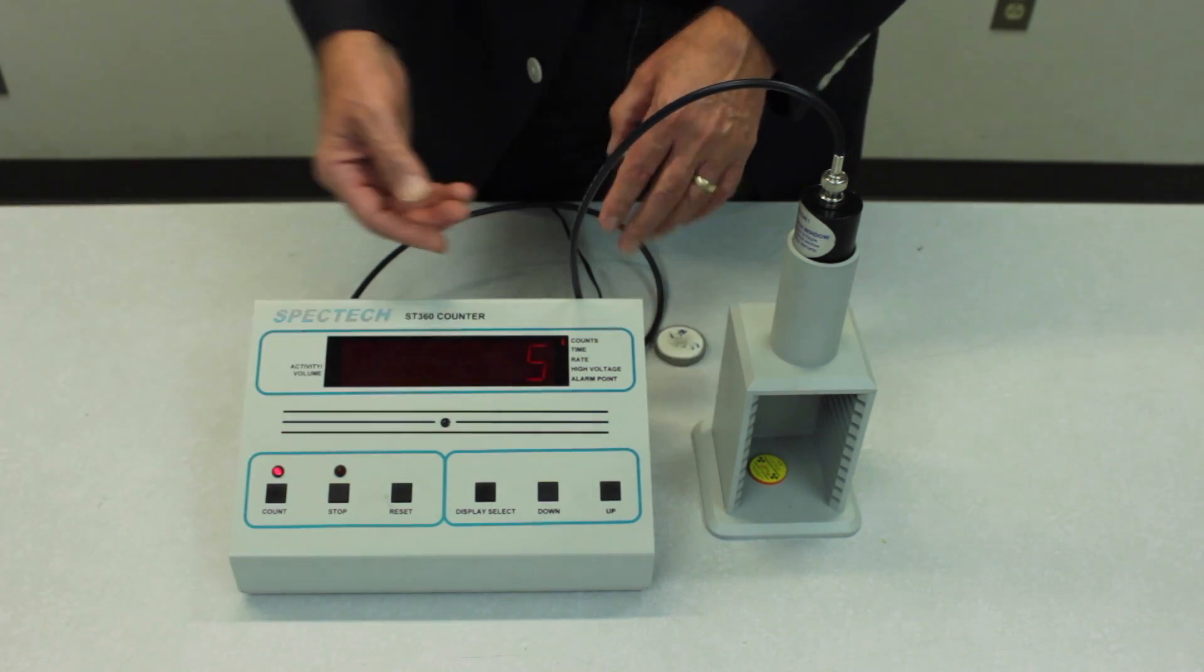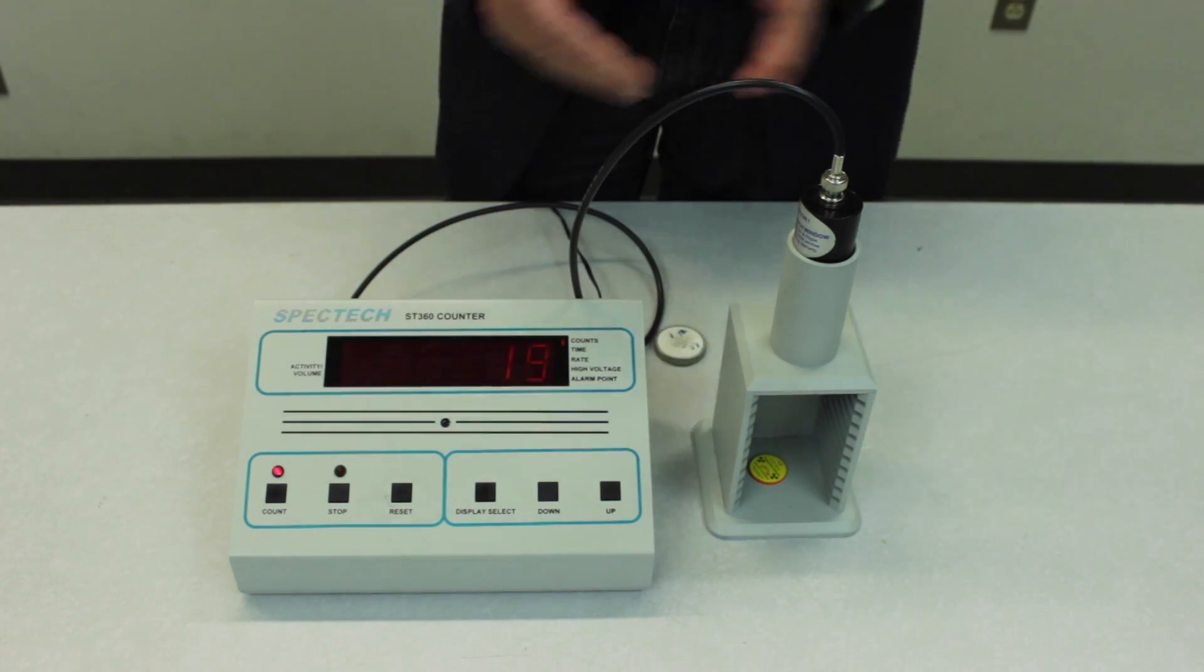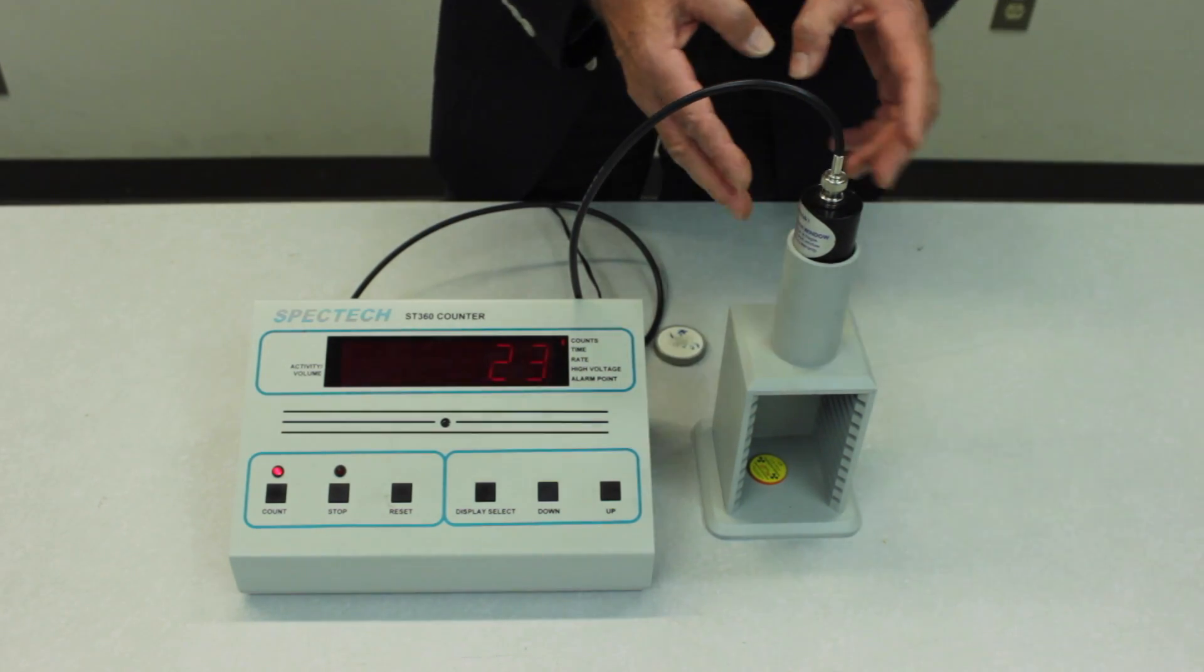And there. So six hundred and sixty volts is enough. But that may not be the threshold for your particular tube. Each of the tubes is slightly different.